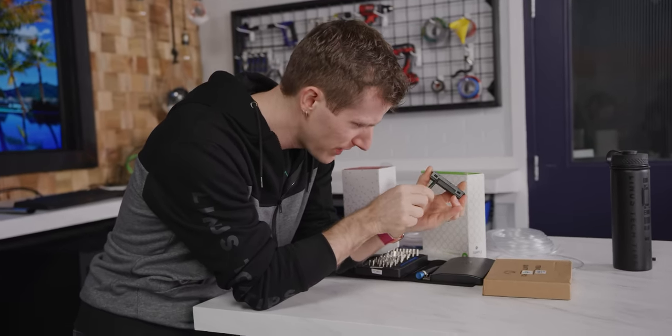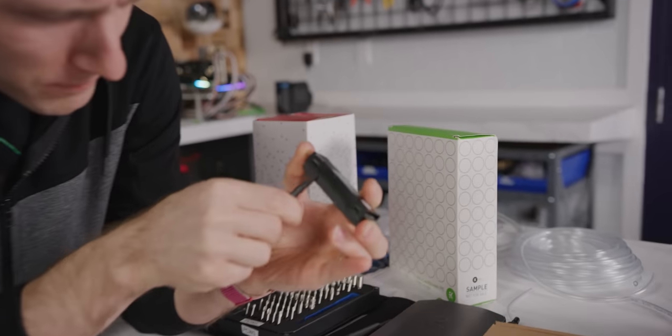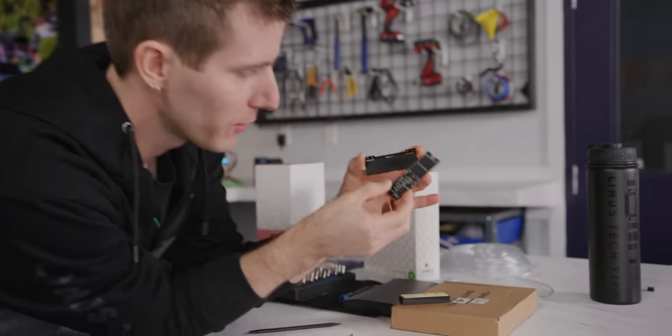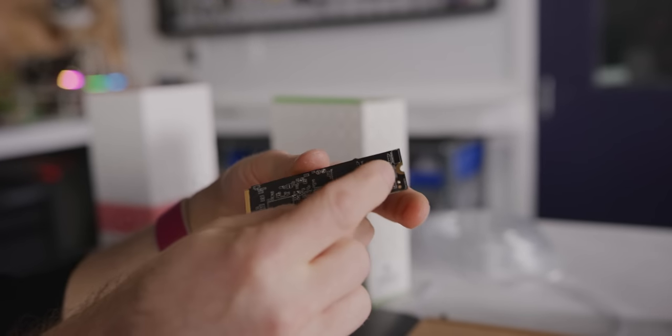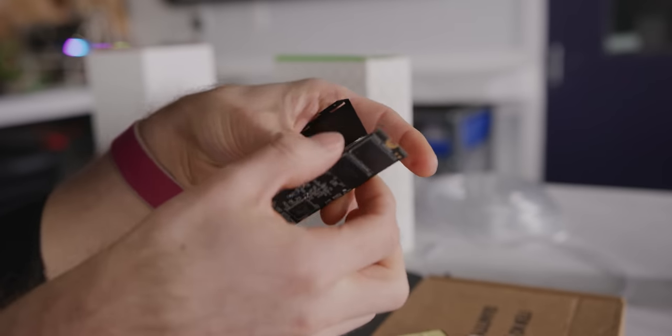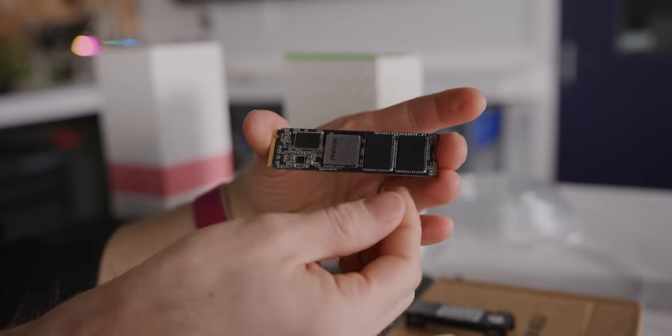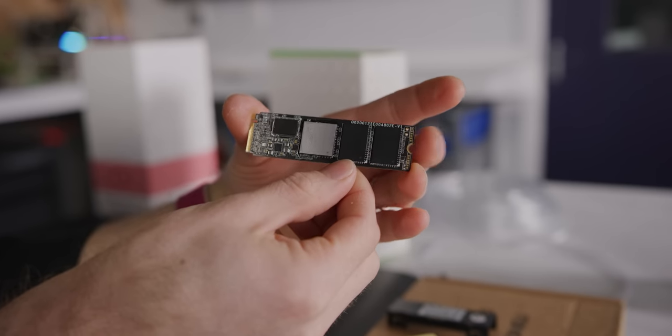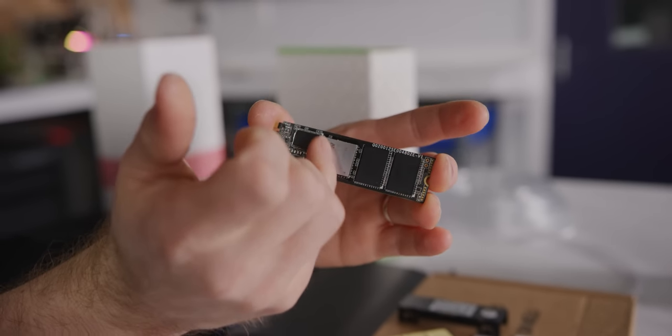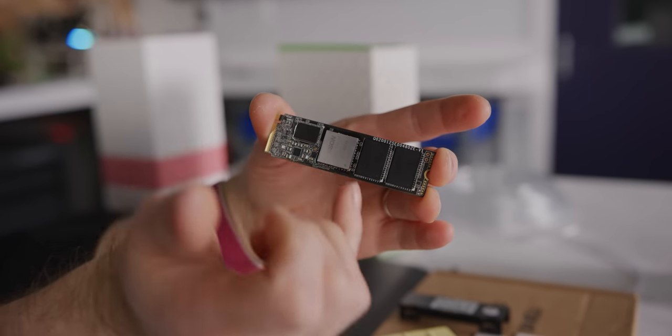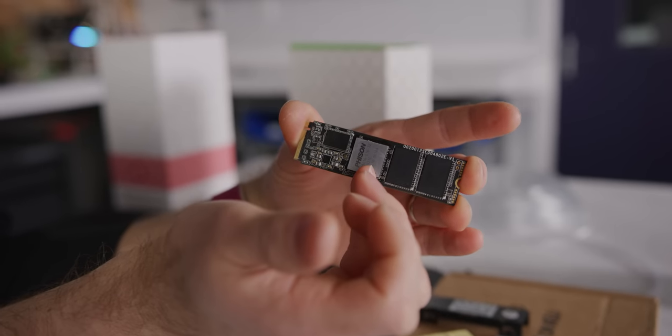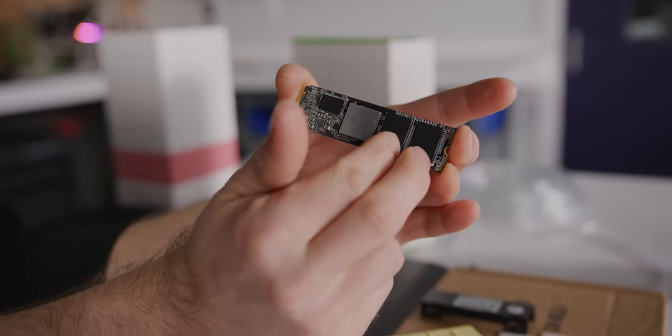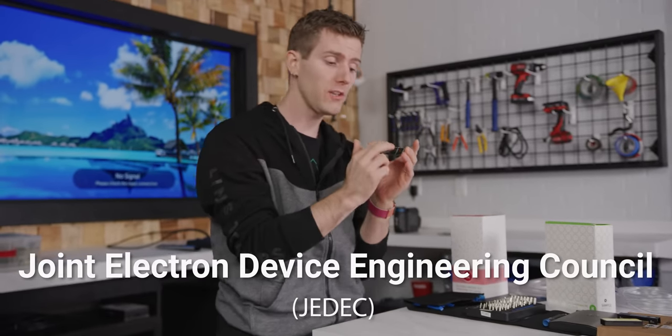Starting by removing the existing heat sink and backplate. Keen-eyed among you might have noticed that lack of thermal interface material between the backplate and these NAND flash chips. The reason for that is that not every component of an SSD needs to be cooled equally. So the controller right here, that follows the normal laws of cooler temperatures being basically better, at least till you get to like, you know, deep in the sub-zeros.